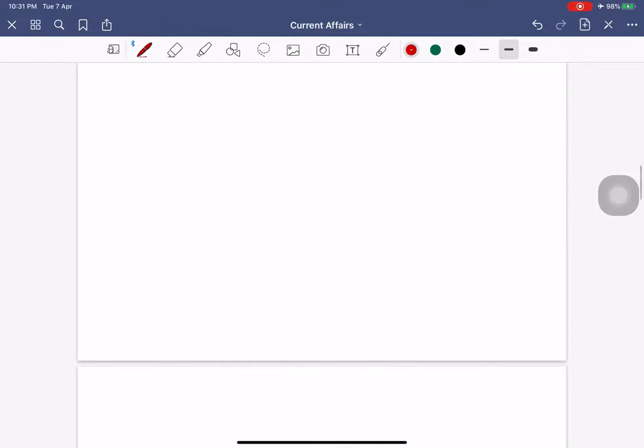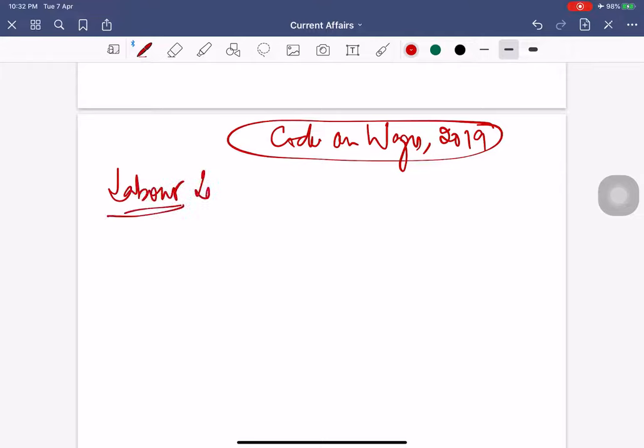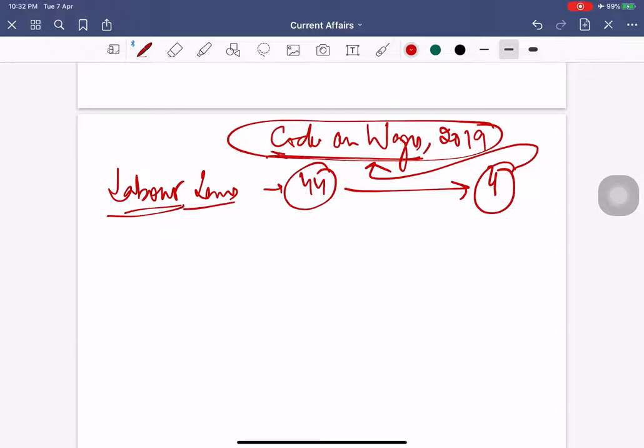Next, we'll come to Code on Wages 2019. You know that government wants to combine more than 44 central labor laws into four codes. Among them is the Code on Wages, which has been passed by Lok Sabha. The code replaces four laws.